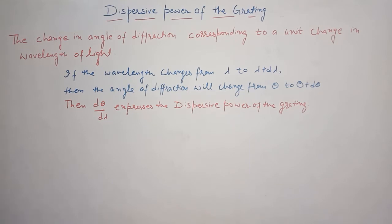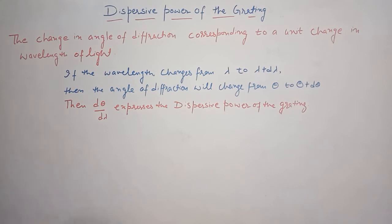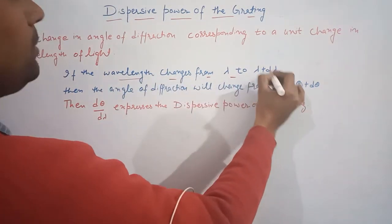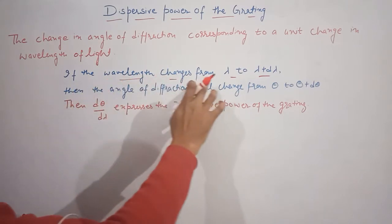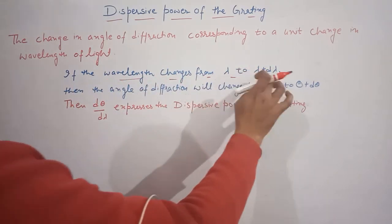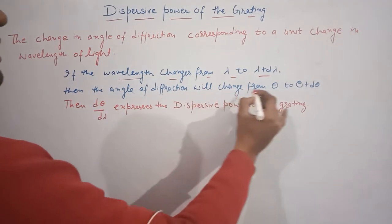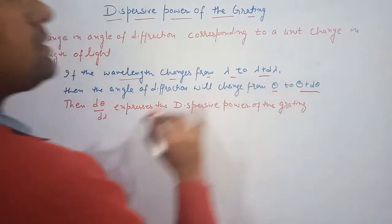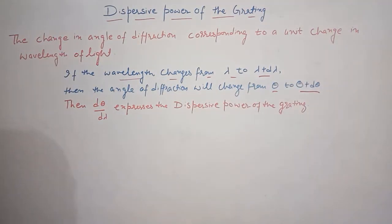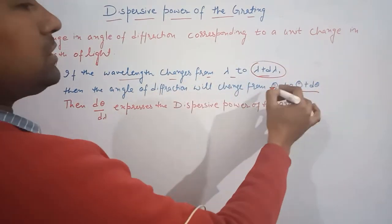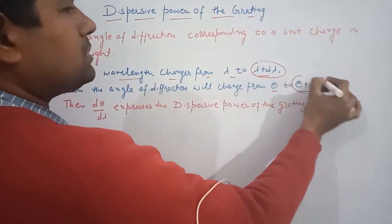If the wavelength changes from lambda to lambda plus d-lambda, then the angle of diffraction will change from theta to theta plus d-theta. This relationship defines the dispersive power of the grating.